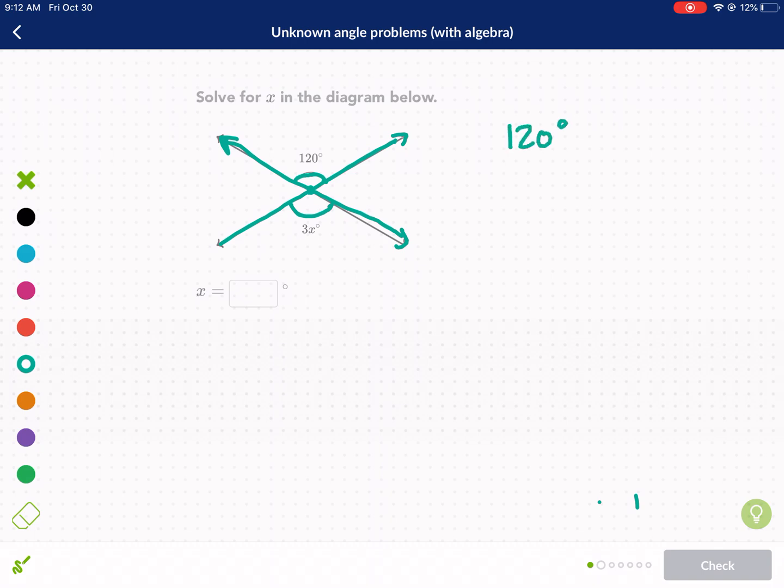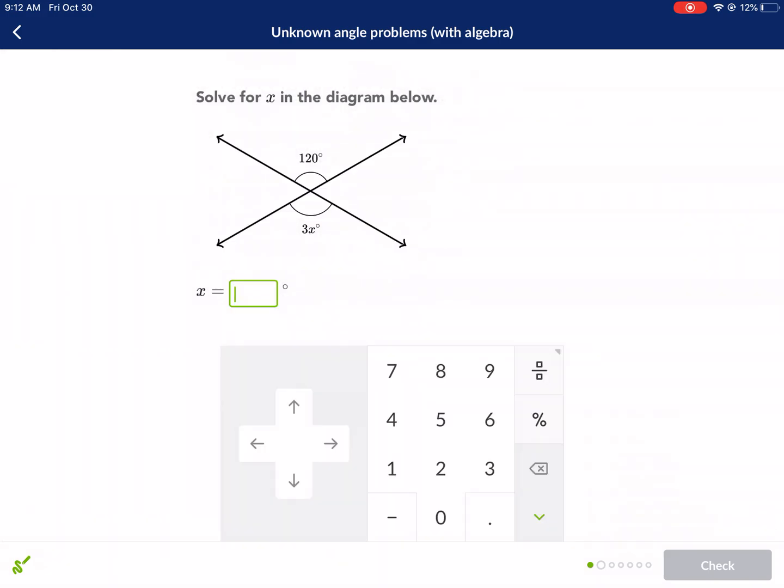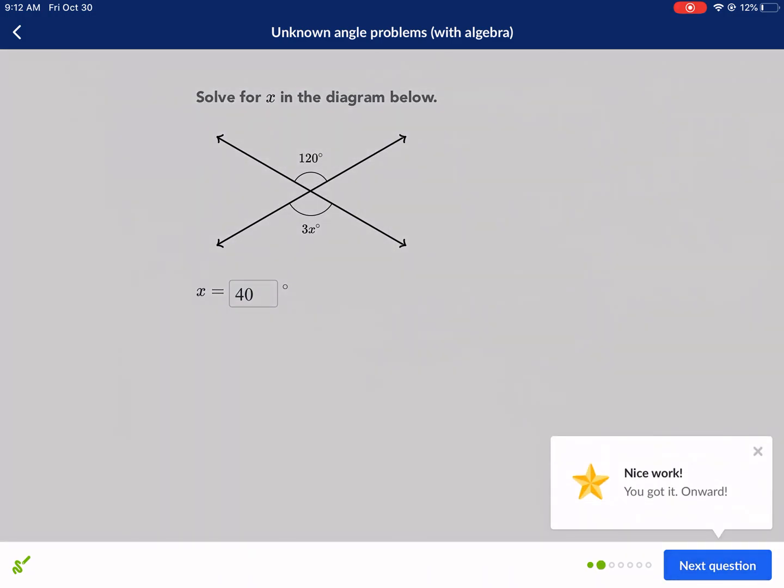So you say 120 is equal to 3X. Now it's very simple. We just divide by 3, and we get X equals 40 degrees. Well, it's not going to be 40 degrees, but the value of X is 40. I don't know why it has the degree sign there. Kind of an error on Khan Academy's part.